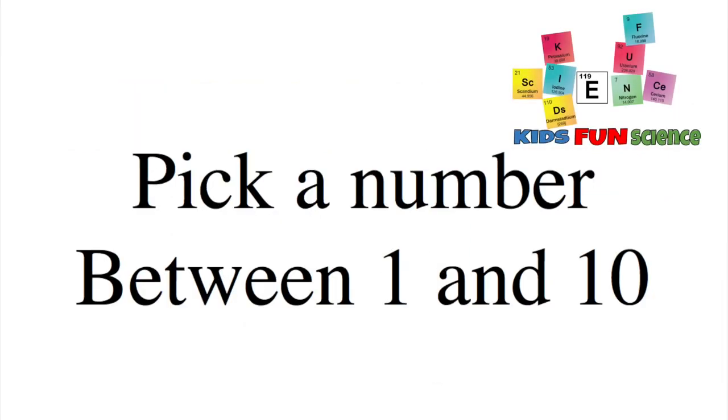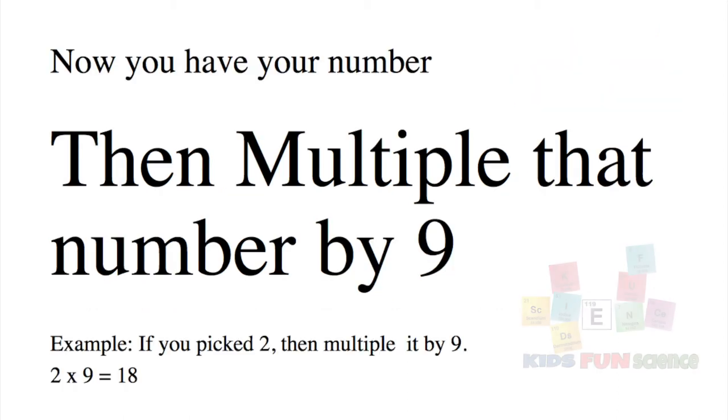Okay, to start, we're going to go ahead and pick a number between 1 and 10 and write that down on a piece of paper. Now take your number and multiply that by 9. For example, 2 times 9 equals 18.